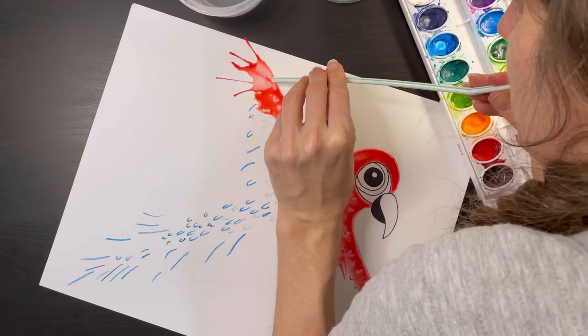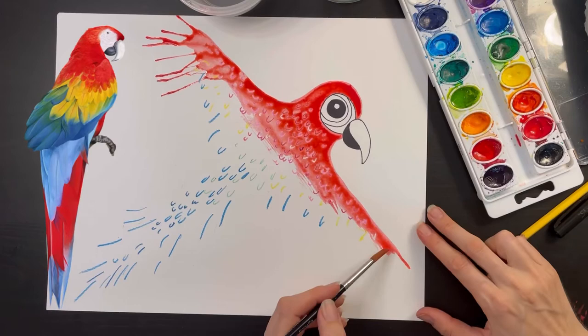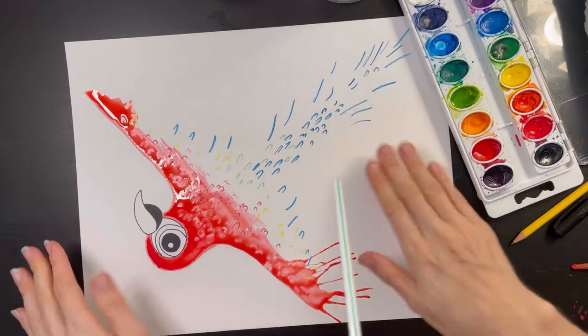Now I'm going to repeat these steps on the other wing. I'm going to puddle that paint up real thick, and then before the paint has a chance to soak into the paper, I'm once again going to blow on it with the straw.